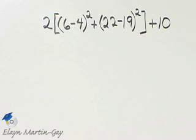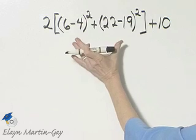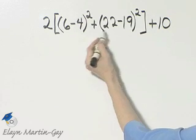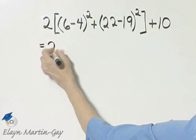Let's evaluate this expression keeping in mind order of operations. I have a set of brackets and within that I have two sets of parentheses. So we'll work within the parentheses independent of each other.